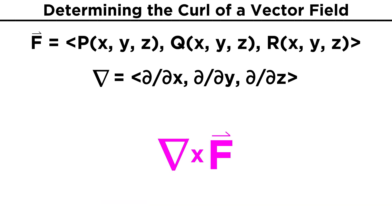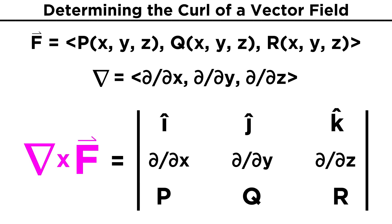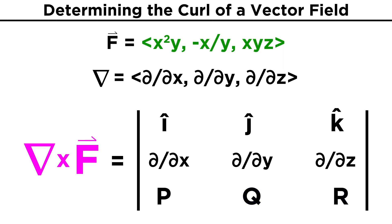Next, let's go over the curl. As we mentioned, the curl will be the cross product between del and a vector field F. Remembering how the cross product works from a previous tutorial, we set up a matrix with i, j, and k on the top row, the elements of del on the second row, and the elements of F on the last row. Let's once again consider the vector field F = (x²y, -x/y, xyz). To find the curl, we will take the determinant of the matrix with rows (i, j, k), (d/dx, d/dy, d/dz), (x²y, -x/y, xyz).